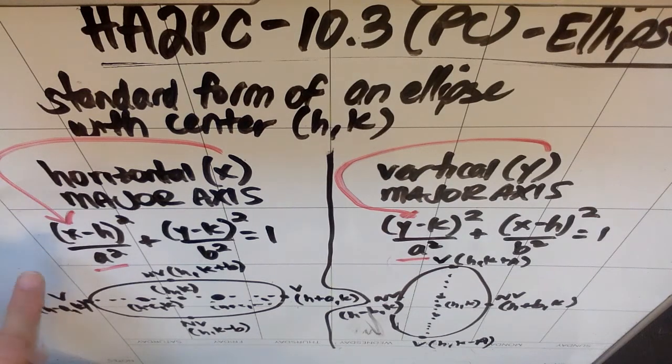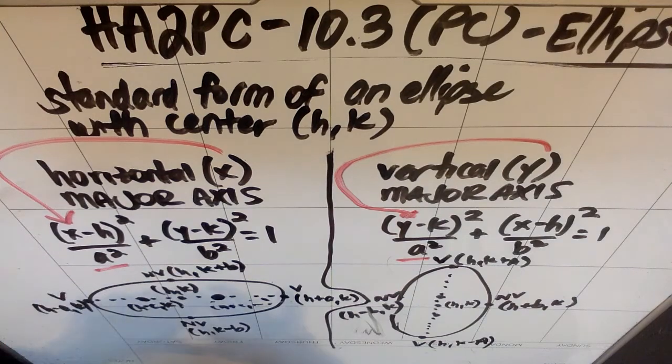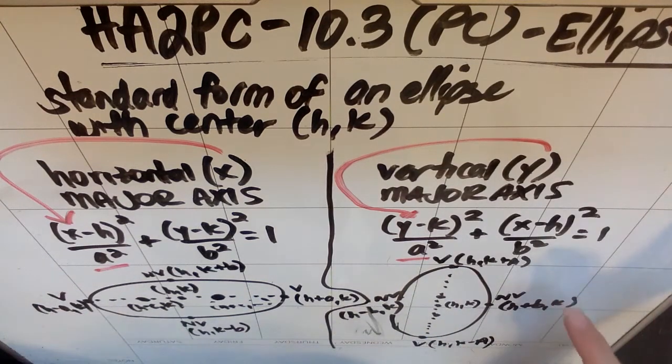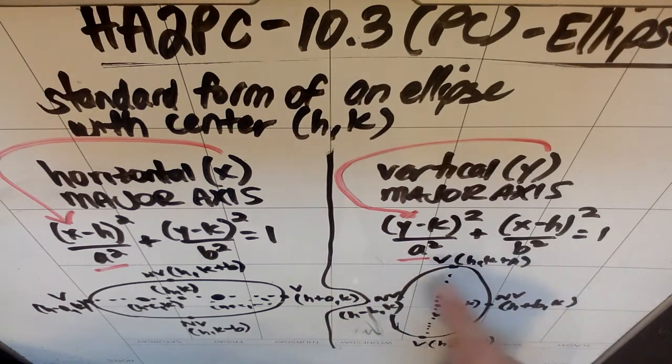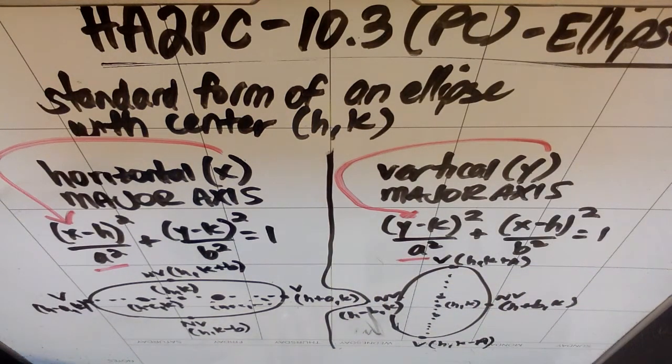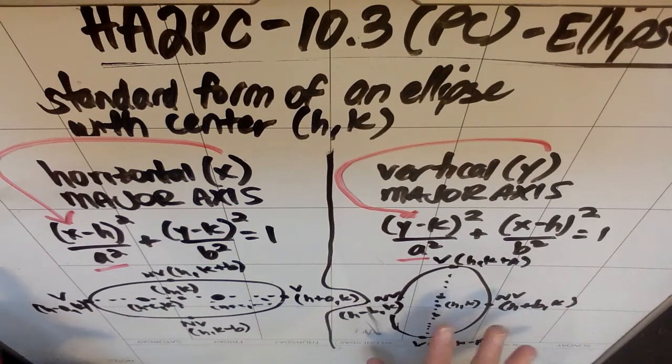So essentially if the x squared is on top of the bigger number then it's a long skinny ellipse. If the y squared is on top of the bigger number, because a squared will be bigger than b squared, then it's a tall skinny ellipse.